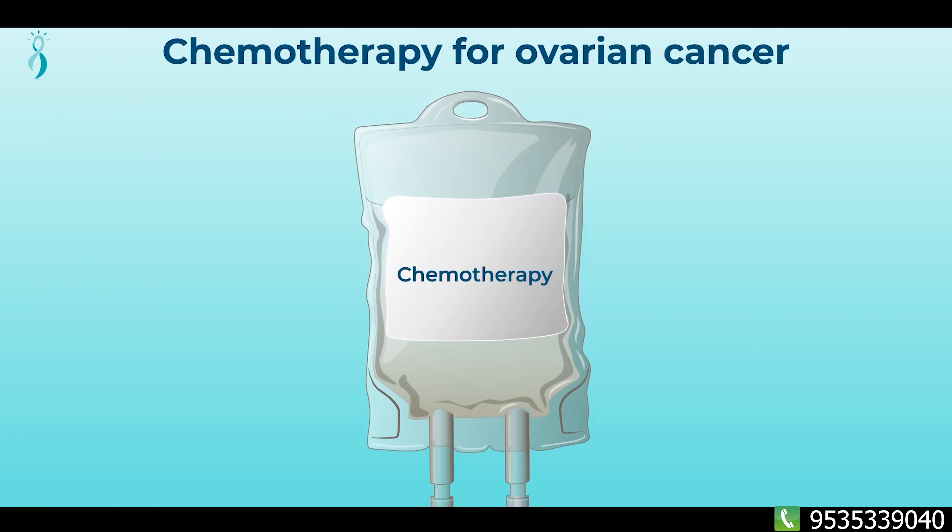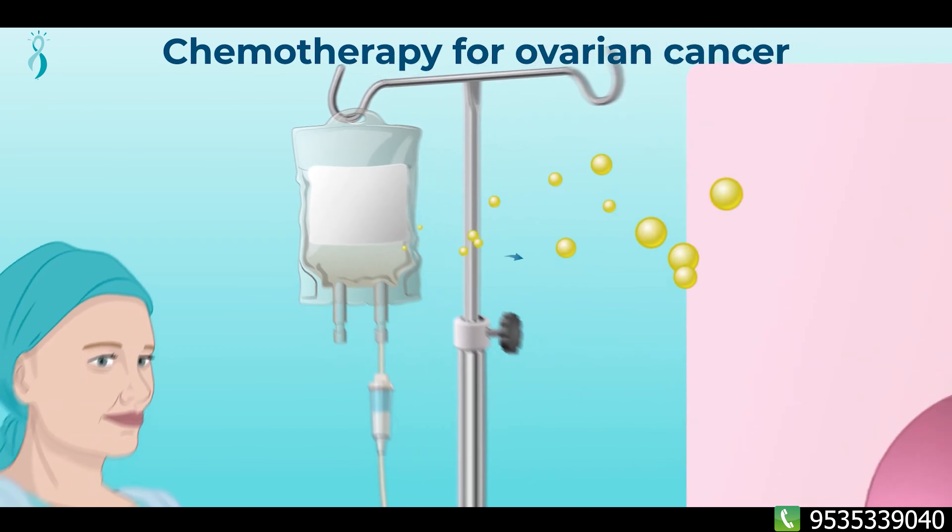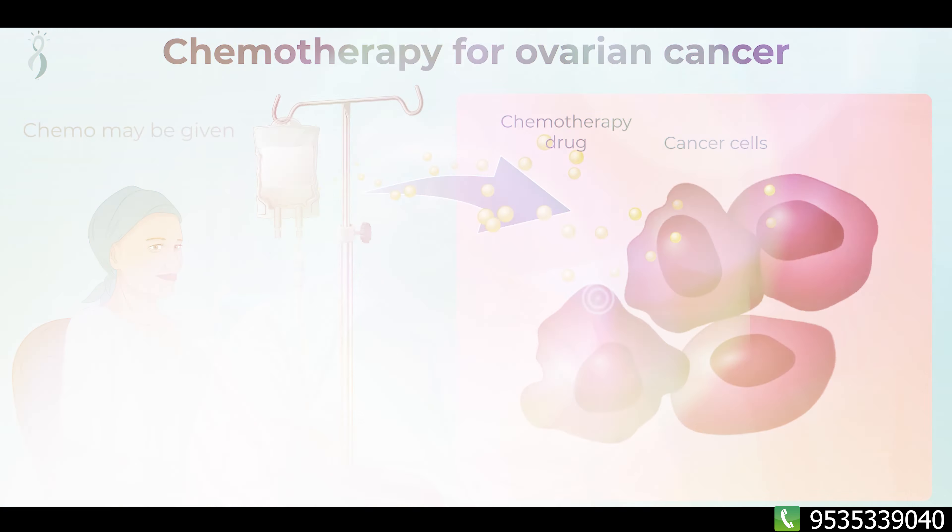Most commonly, for ovarian cancer at stage 3 or stage 4, we do chemotherapy first to reduce the disease, and then perform surgery to remove the affected organs. If it is stage 1, we do surgery first and then follow with chemotherapy for stage 1 or stage 2.